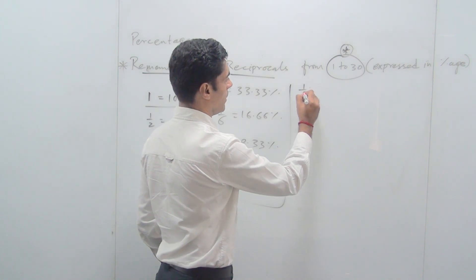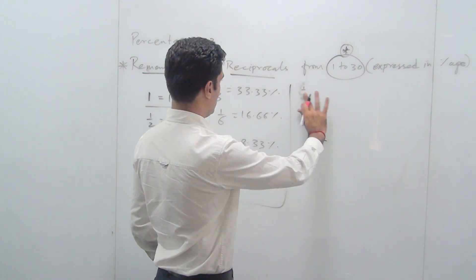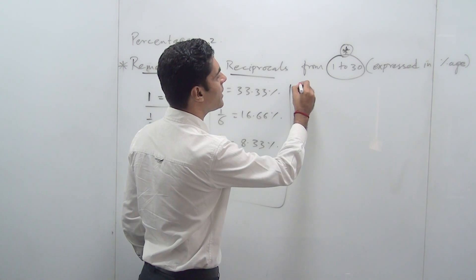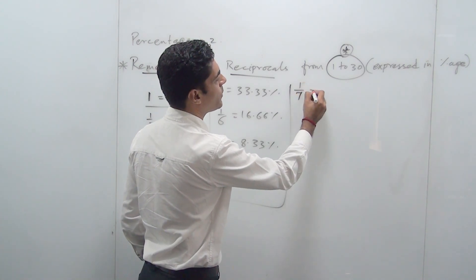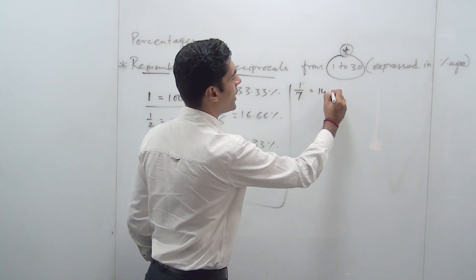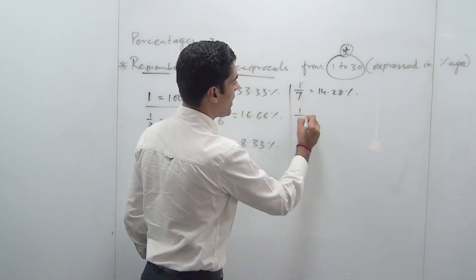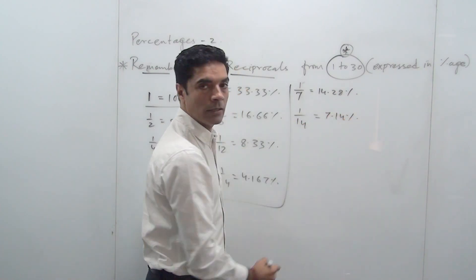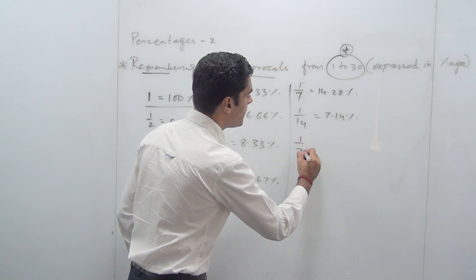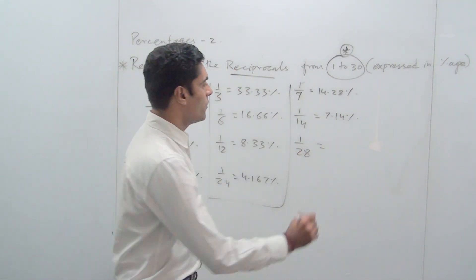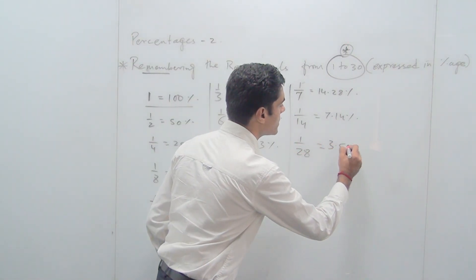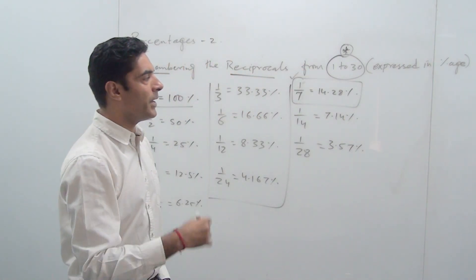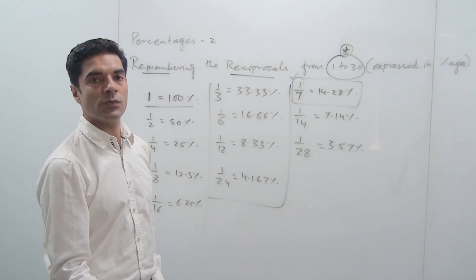For a prime number like 7, you need to remember it directly. The reciprocal 1/7 is 14.28%, so 1/14 will be half of 14.28 which is 7.14%, and 1/28 will be half of 7.14 which is 3.57%. So what you need to remember is the reciprocal of a prime number — the remaining derived values will simply be half of the previous one.